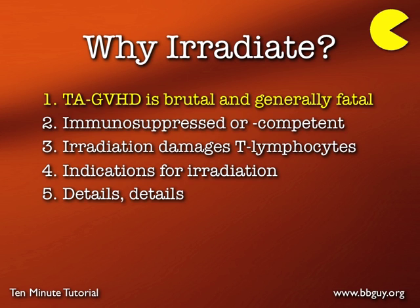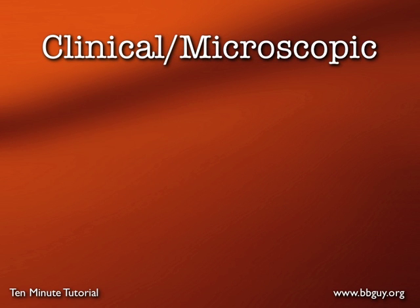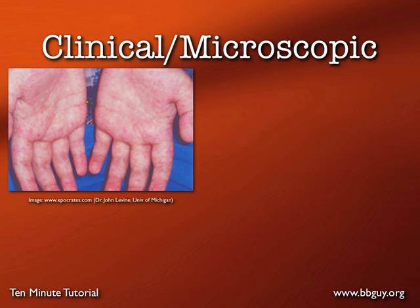You need to know about TA-GvHD. It's a brutal diagnosis — awful, generally fatal. Patients die fairly rapidly, and thankfully it's rare. It's defined as an attack on host tissues by transfused T-lymphocytes that go along with a platelet, red cell, or granulocyte transfusion — cellular blood products. It causes damage to the skin, liver, GI tract, and mucous membranes, but most importantly it wipes out the bone marrow, leading to fatality from overwhelming infections generally within a month or so after transfusion.